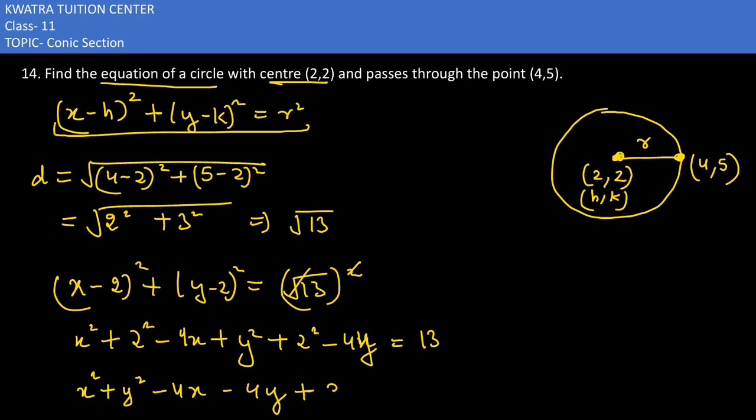4 plus 4 is 8, minus 13 on the left side would equal 0. So the values would be: x squared plus y squared minus 4x minus 4y, 8 minus 13 gives minus 5.